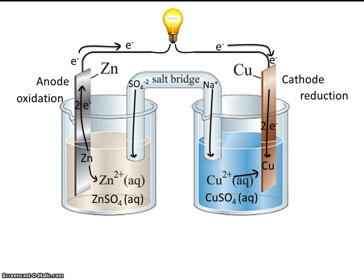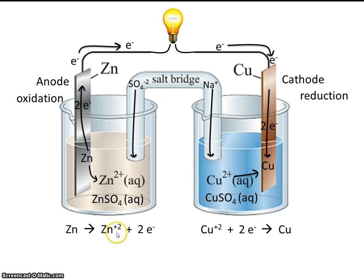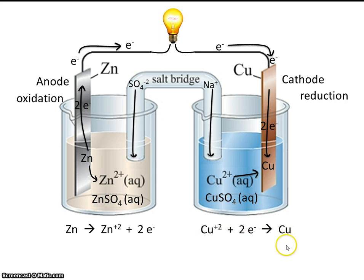Now let's go ahead and write the half-reactions — one for zinc and the other for copper. Zinc is turning into zinc ion as it loses two electrons. And copper ion is gaining two electrons and being reduced to elemental copper.